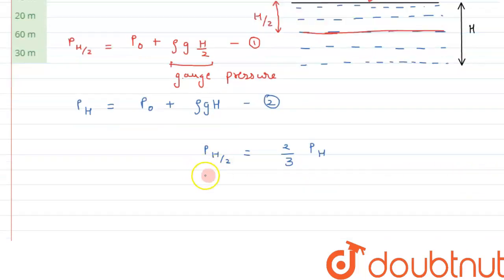Let's substitute the value. P(H/2) can be written as P₀ plus ρg(H/2), and that equals 2/3 P_H, which can be written as P₀ plus ρgH.